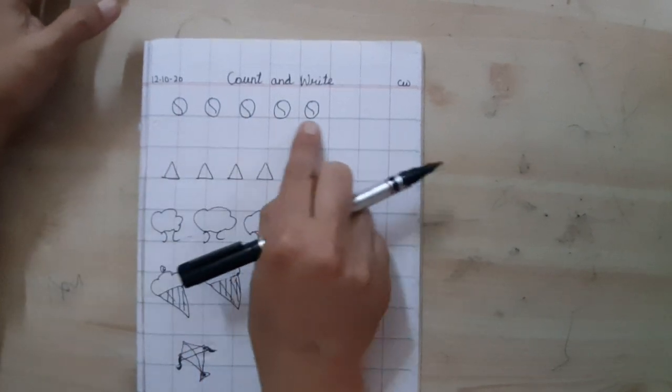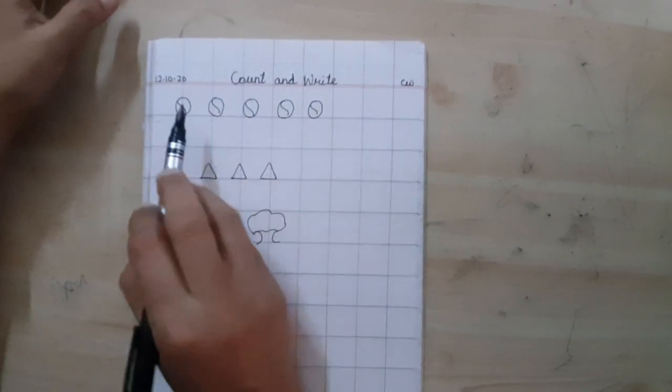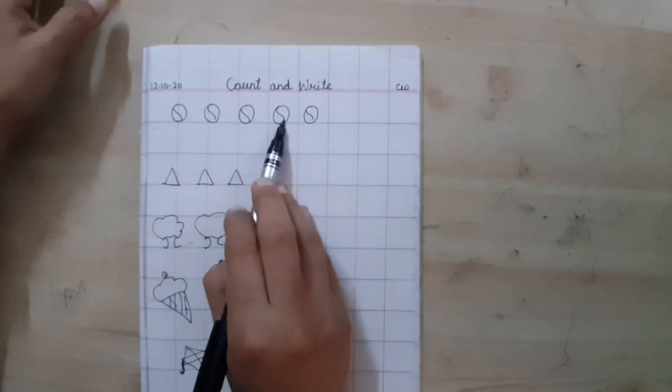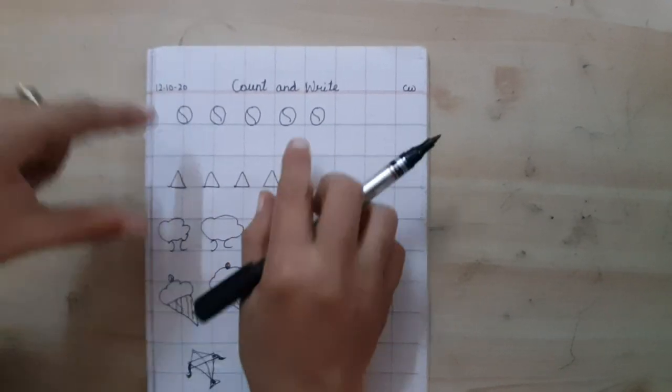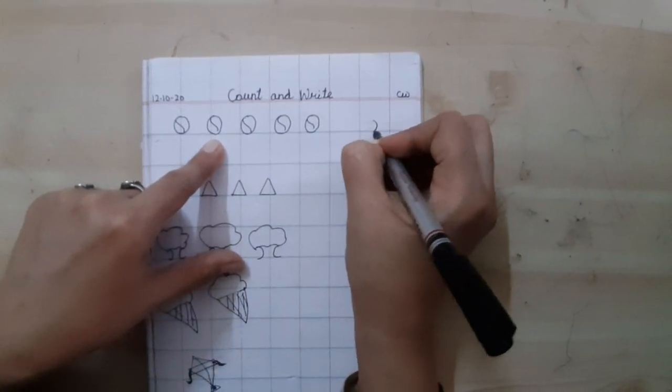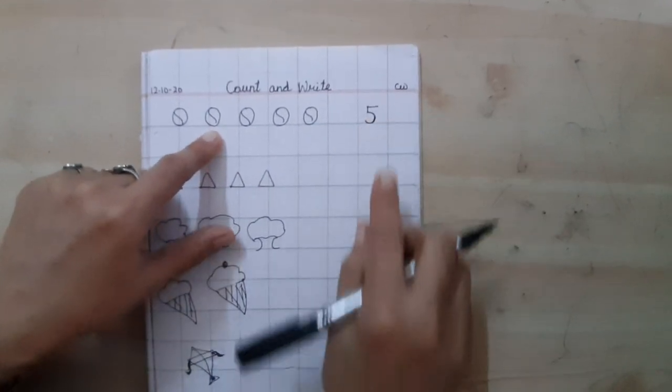These are balls. So count them 1, 2, 3, 4, 5. We have 5 balls. We have to write down there 5. Ok students.